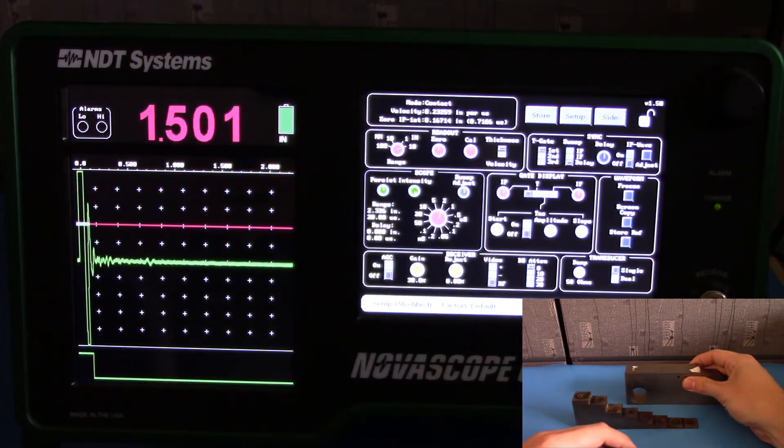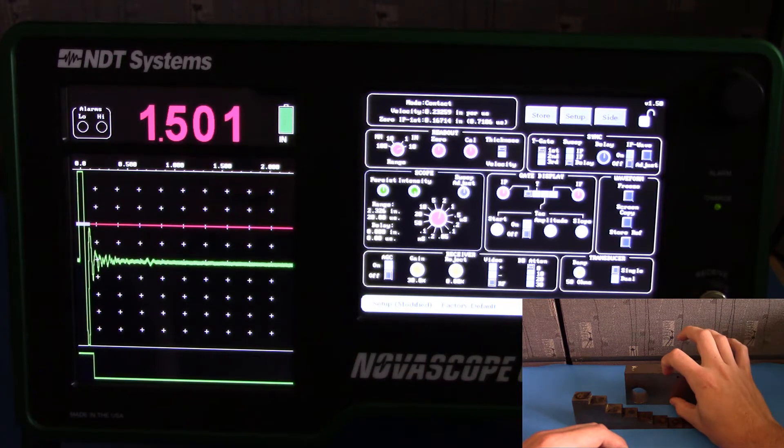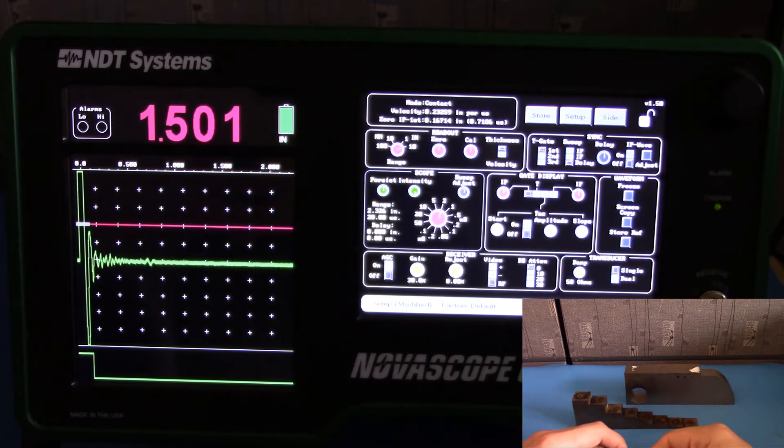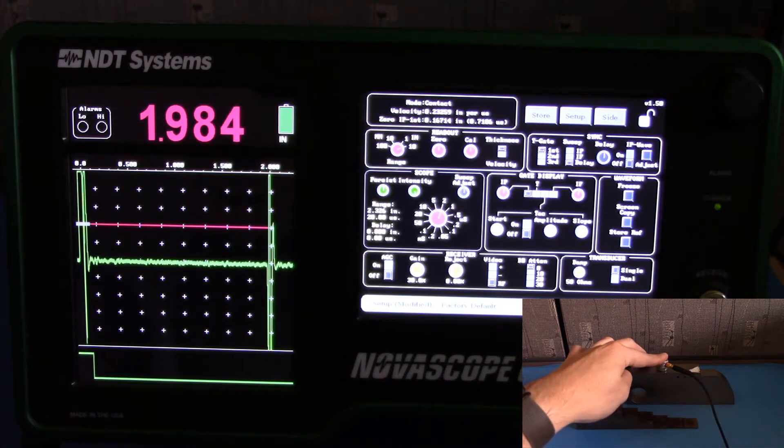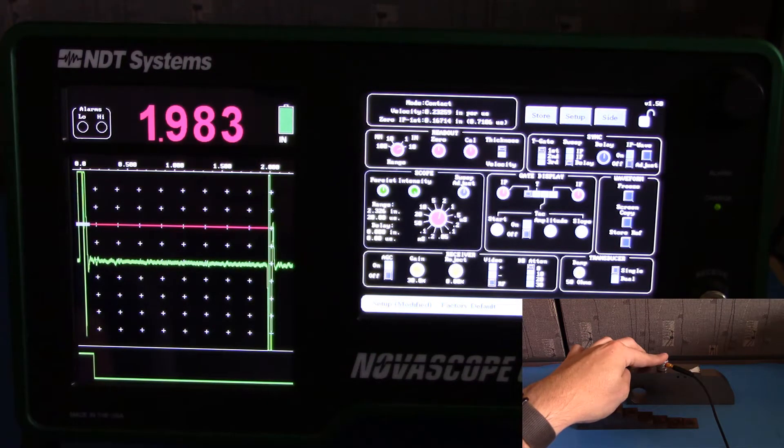Now this is a standard step wedge. We know this is 2 inches thick. But if it were a sample that we did not know, we could now go ahead and measure a 2-inch thickness.